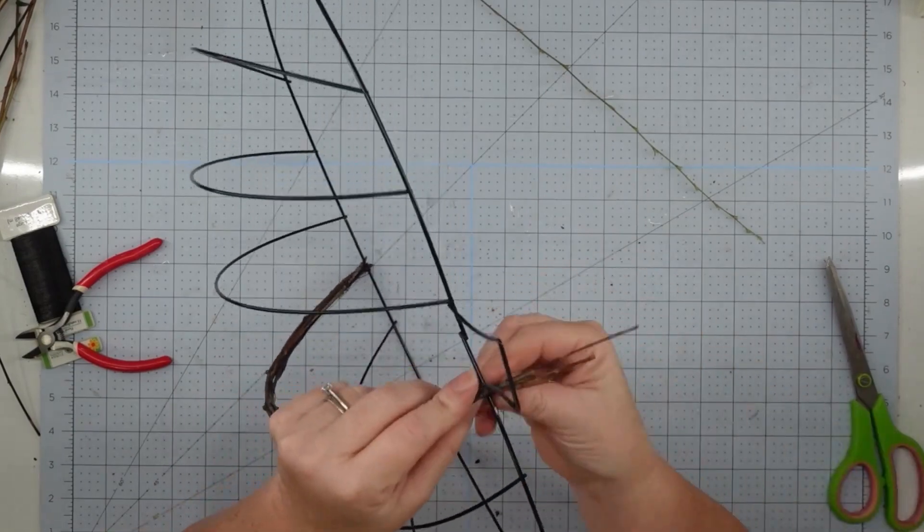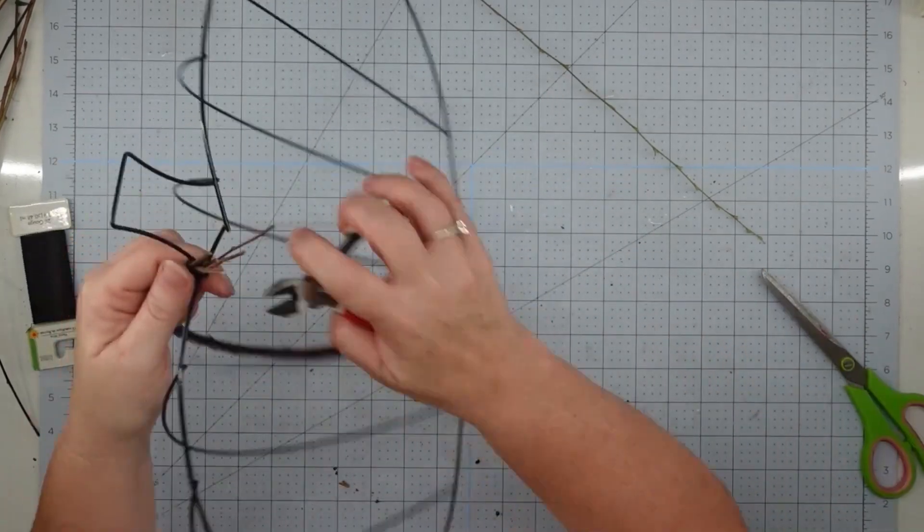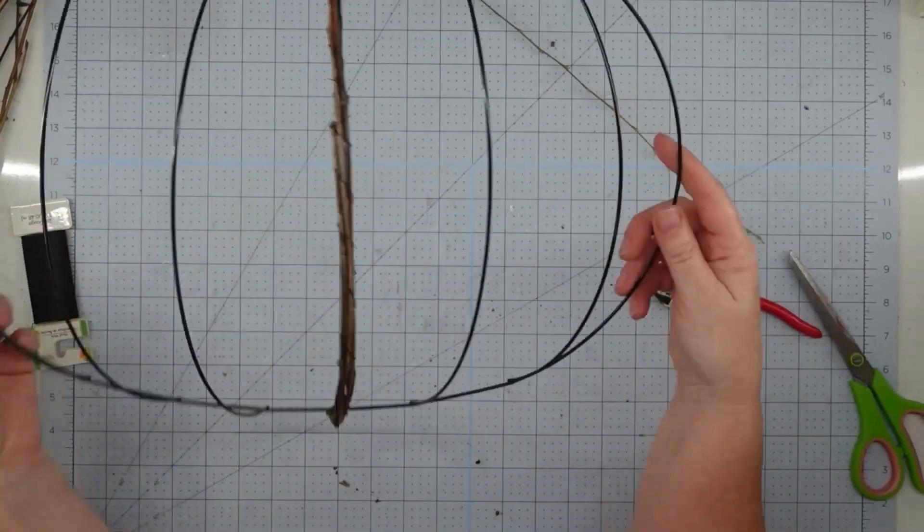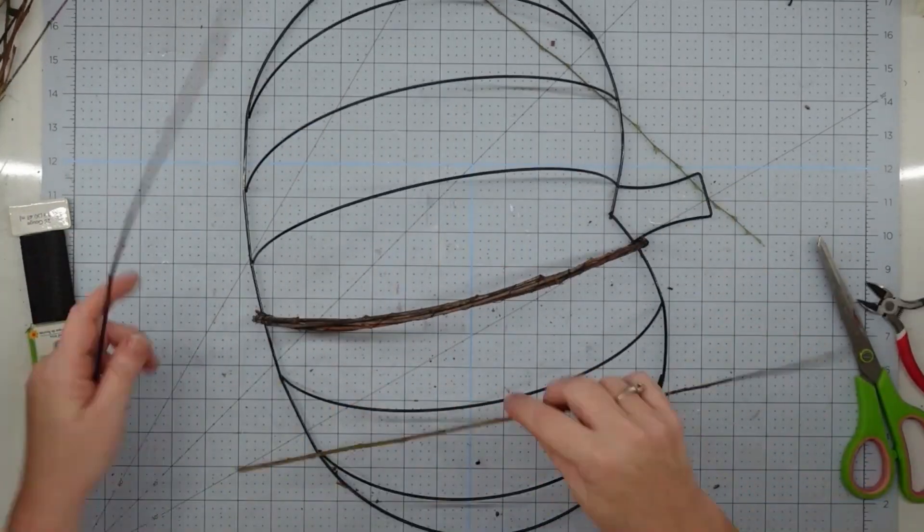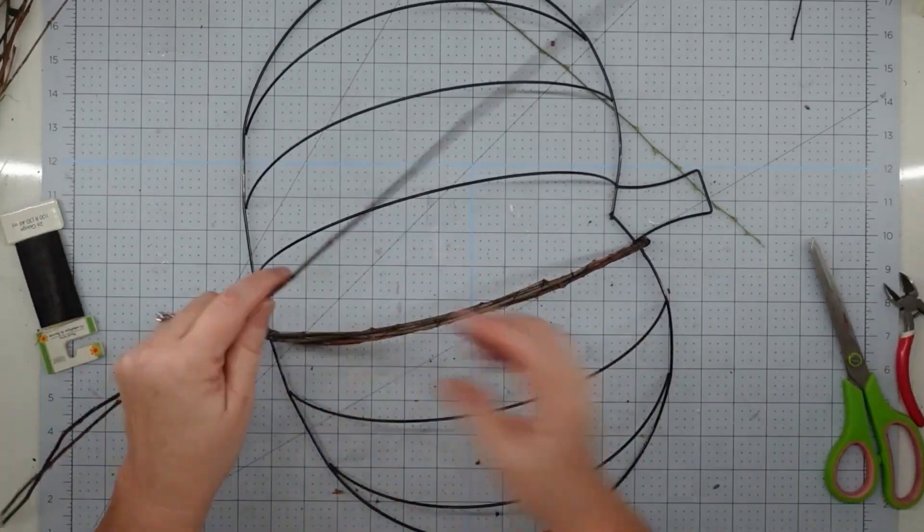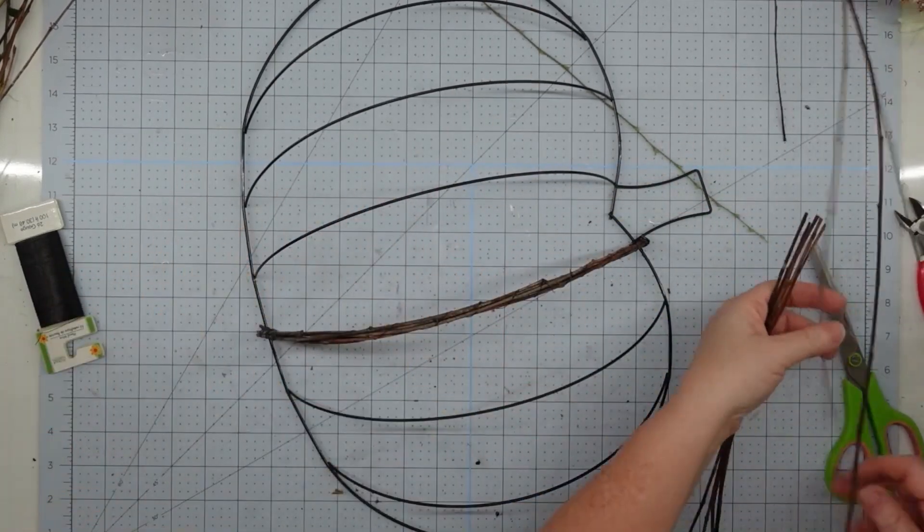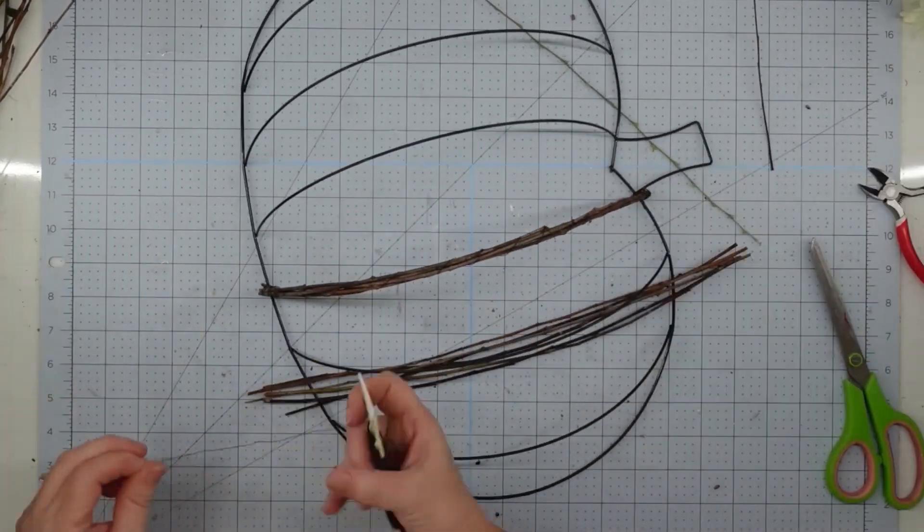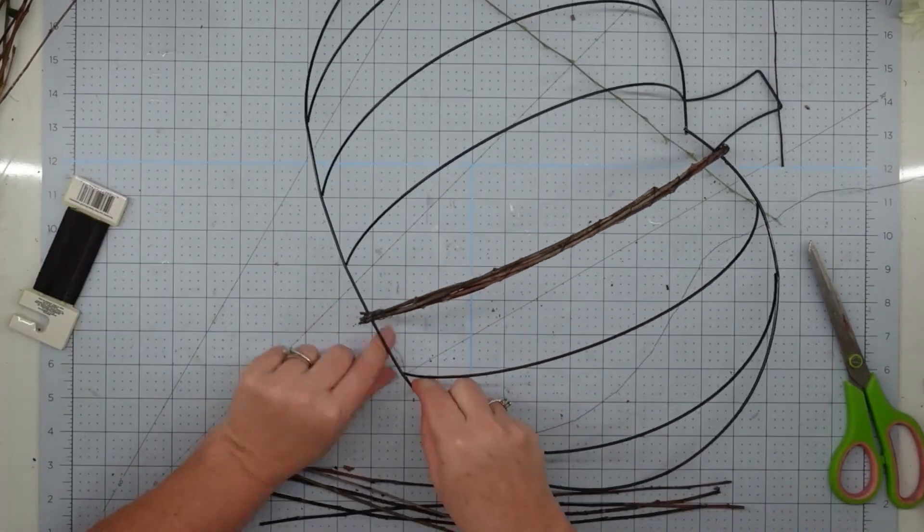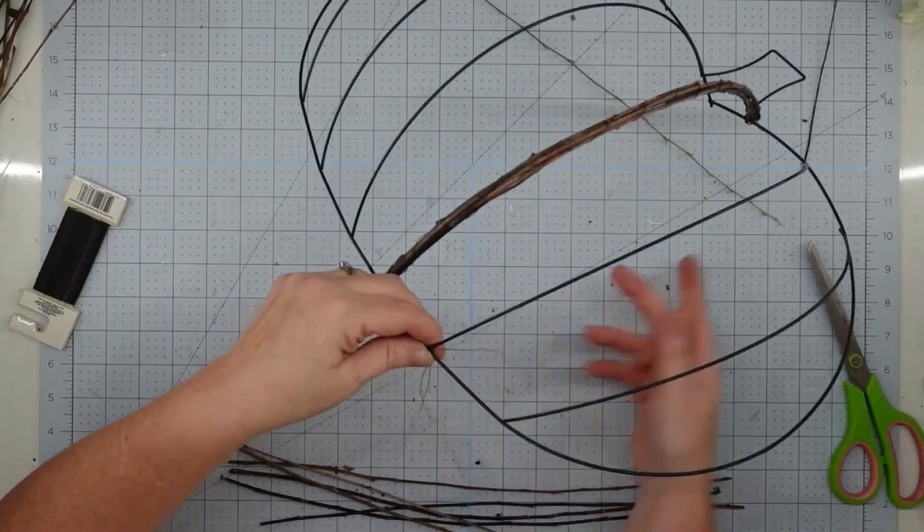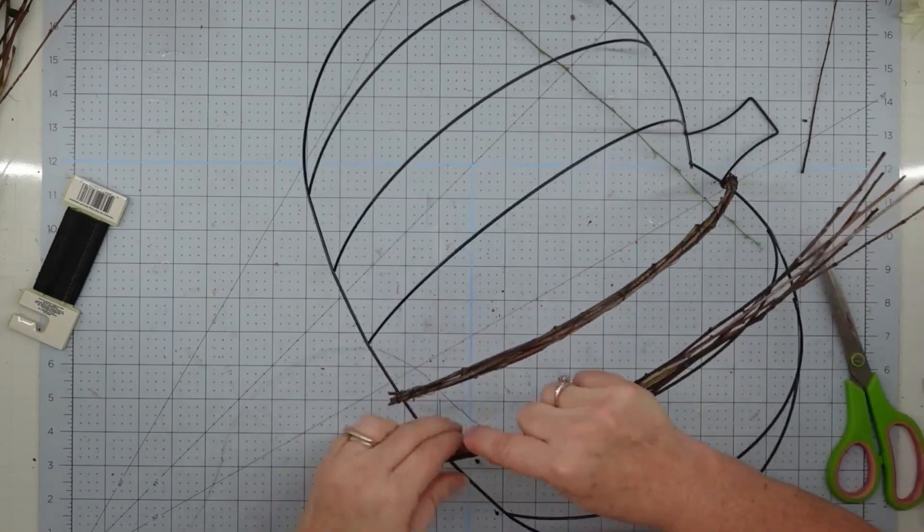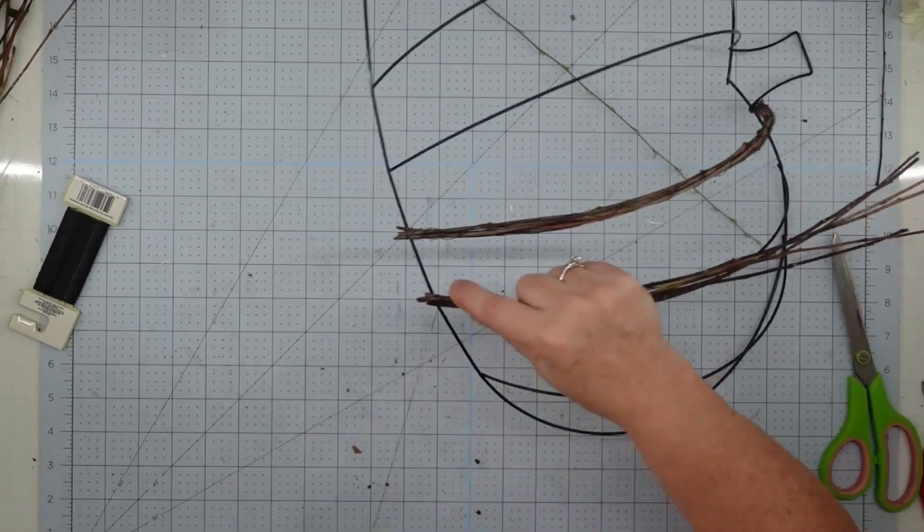Then I took some floral wire. Again, I'm using black to make sure that it blends in, and I would wrap it around the bottom securing it. Then I would lay my sticks over my spine, and I take that wire, and I just kind of go up it, wrapping around as I go until I get to the other end, and I secure it on the other end, and then I clip off the branches on both ends to kind of make them even. You don't want them sticking out because that will scratch your door.